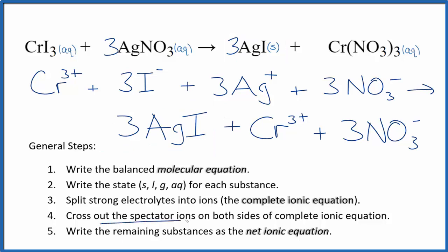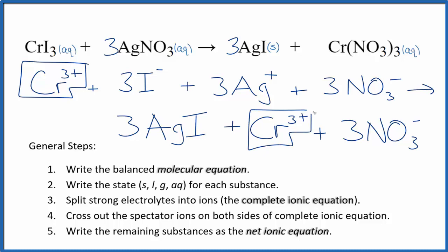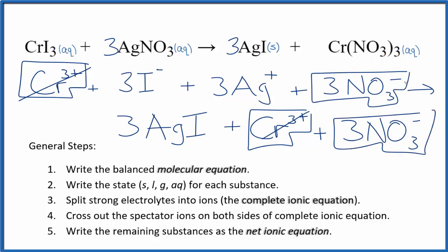Now we can cross out the spectator ions — they're on both sides. I see in the reactants the chromium-3 ion, and again in the products. That's a spectator ion — you can cross that out. And then three nitrate ions here in the reactants and again in the products — spectator ions, we cross those out. What's left is the net ionic equation for CrI₃ plus AgNO₃.